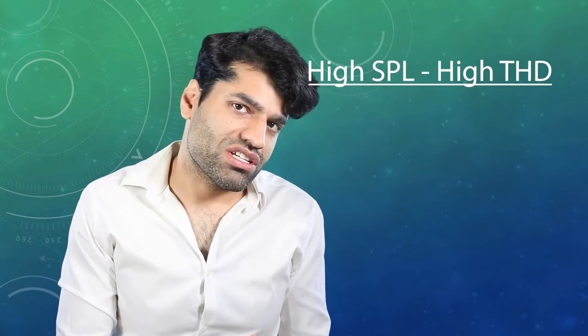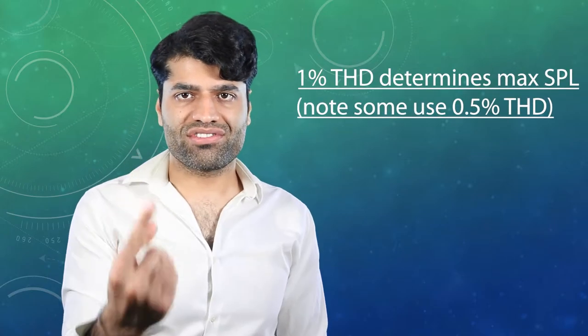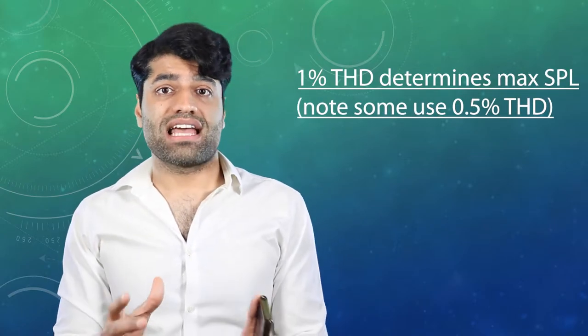By increasing the SPL, the THD increases. Once the THD reaches 1%, it is classified as the Max SPL. 1% THD is used as a threshold because the human ear cannot detect any distortions below 1% THD.